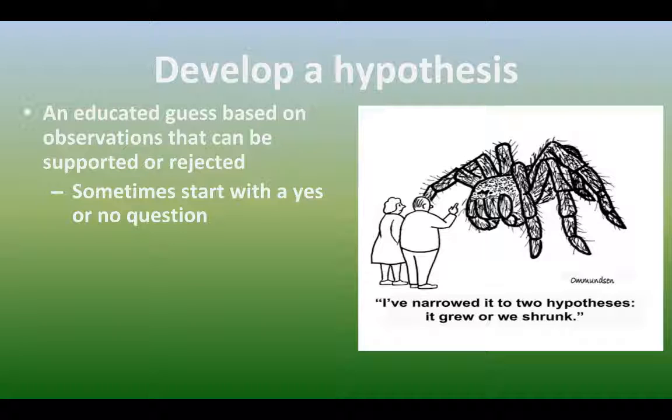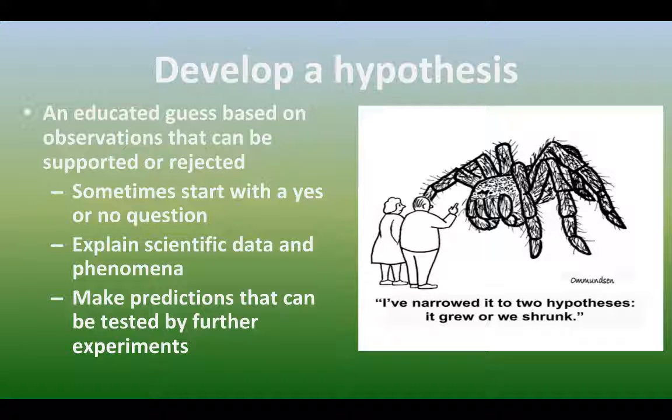Especially important is, can it be supported or rejected? Can you say yes or no? So if X happens, Z is the result. It helps us explain this data and this phenomena and what's happening in our daily lives and even in Earth's systems.